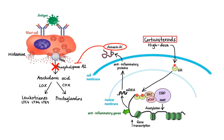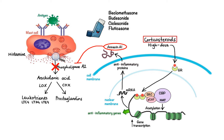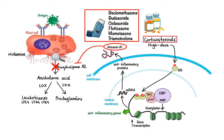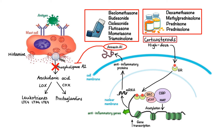Examples of corticosteroids used to treat lung inflammation include inhaled agents such as beclomethasone, budesonide, ciclesonide, fluticasone, mometasone, and triamcinolone, and oral agents such as dexamethasone, methylprednisolone, prednisone, and prednisolone. And with that, I wanted to thank you for watching, I hope you enjoyed this video, and as always, stay tuned for more!